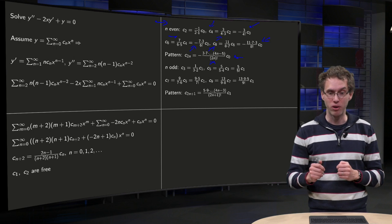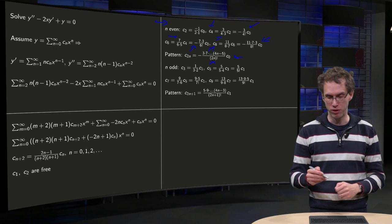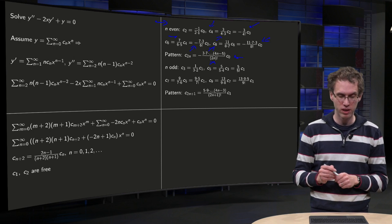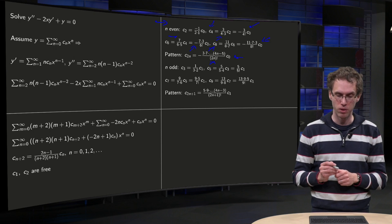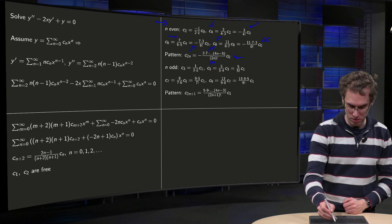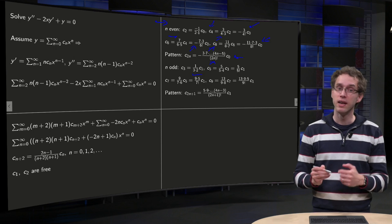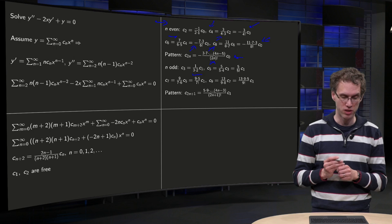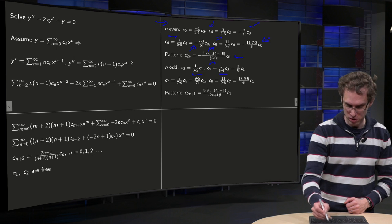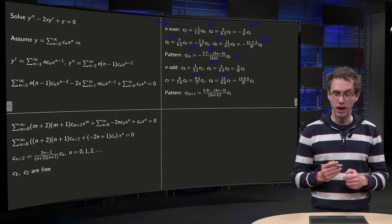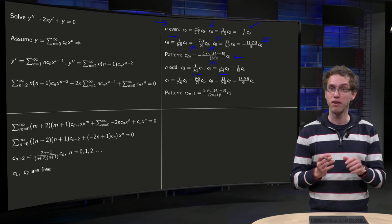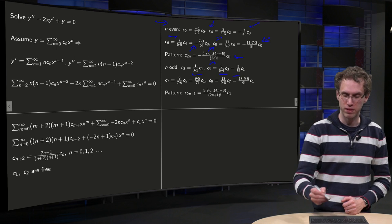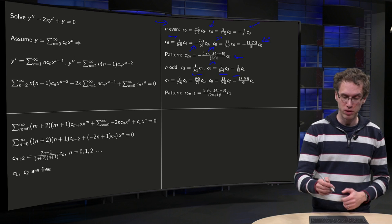And for the odd coefficients, just compute the first few first. So c1 free, and if you plug in n = 1, you get c3 = (2n - 1), so 1/(3×2) times c1. Then you plug in n = 3, so you get c5 = (2n - 1), so 5/(5×4) times c3. So you get, again, don't cancel out the factor 5, because you could miss the pattern. So 5/(5!) times c1. And go on with the others.